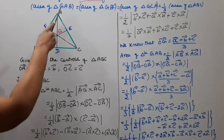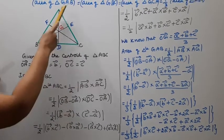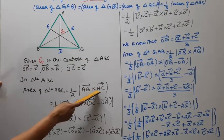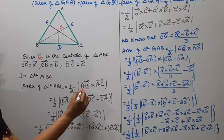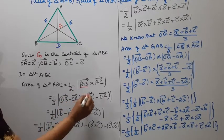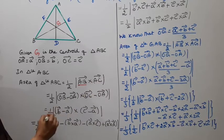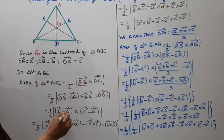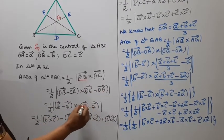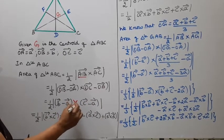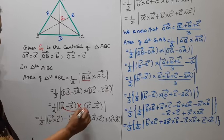Area of triangle ABC equals one-half into mod of AB vector cross AC vector, where AB vector = OB vector minus OA vector = B vector minus A vector, and AC vector = OC vector minus OA vector = C vector minus A vector. So area of ABC equals one-half mod of (B vector minus A vector) cross (C vector minus A vector).